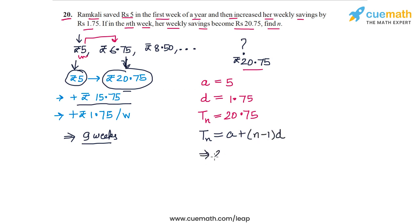So let's plug in the values. So TN is 20.75, A is 5 plus N minus 1 times D, and D let's plug in the value for D also, is N minus 1 into 1.75. So if I subtract this 5 from 20.75 I get 15.75 and this is equal to 1.75 into N minus 1.